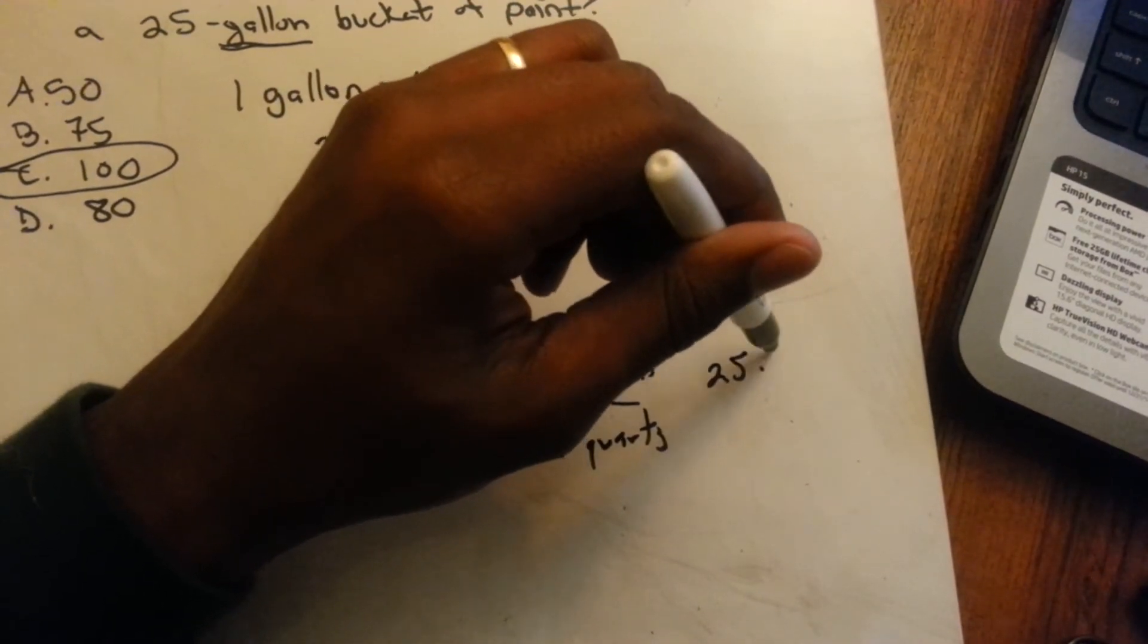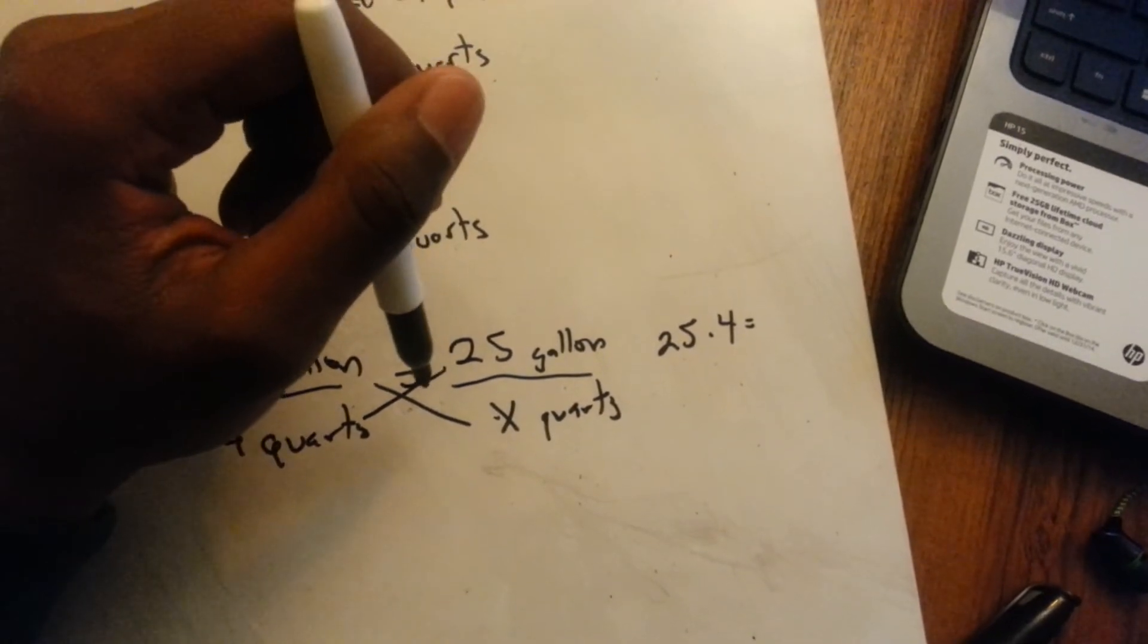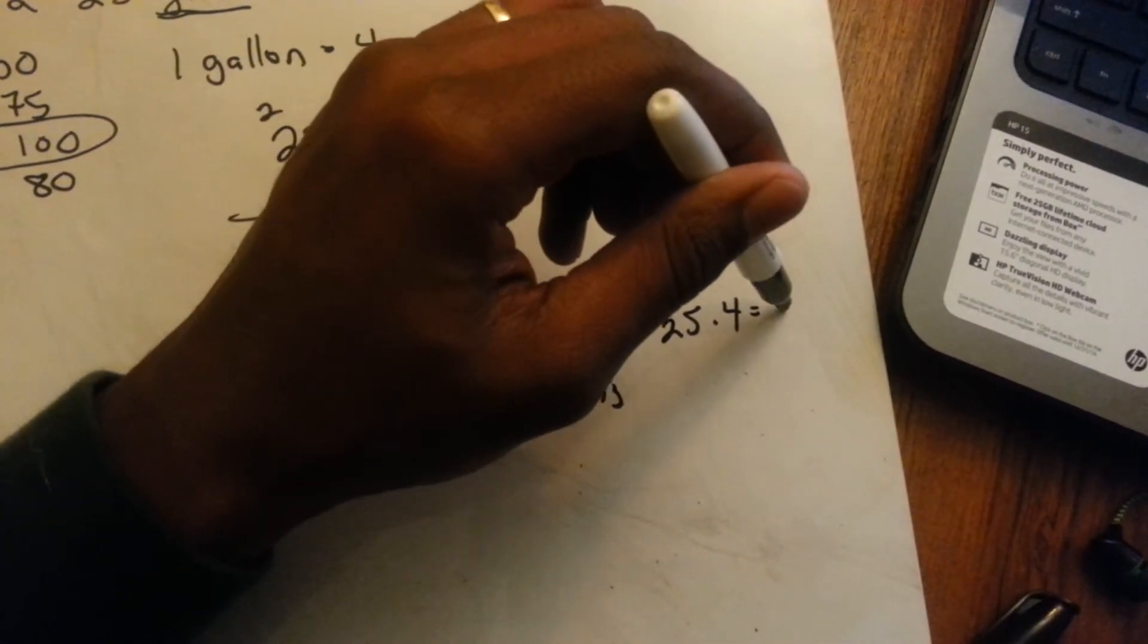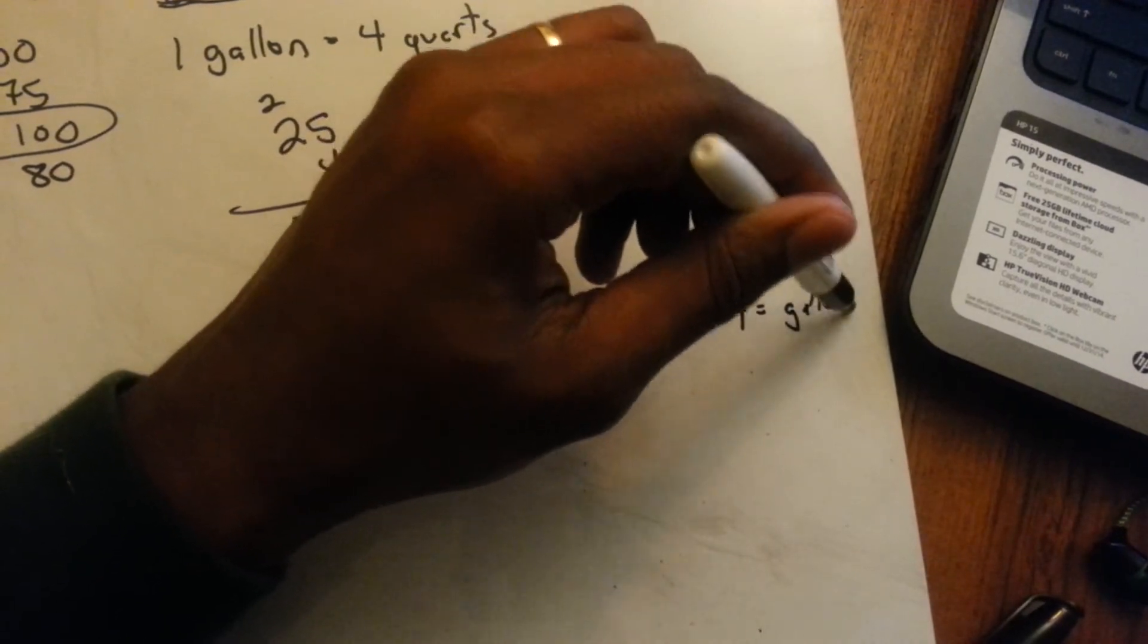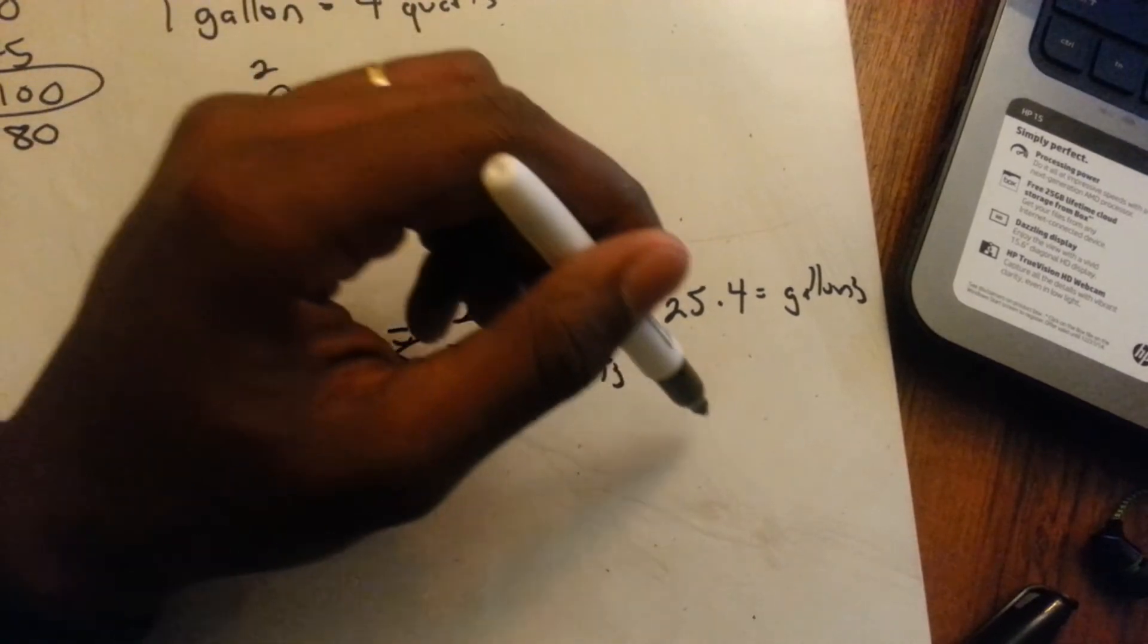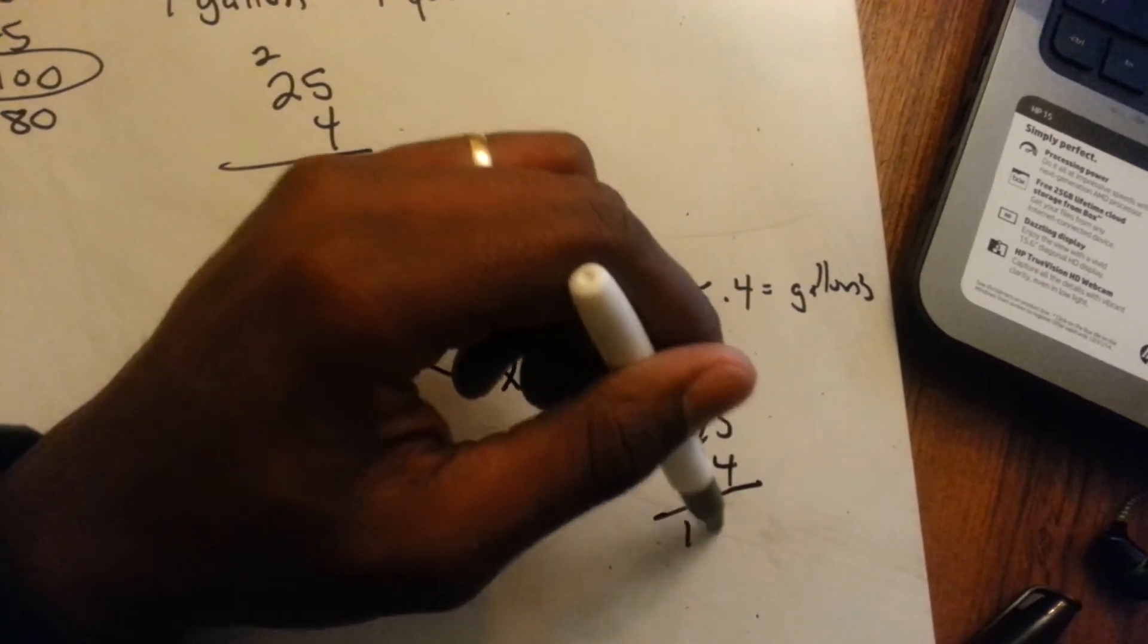25 times four equals how many gallons it would be. Equals gallons. And you just end up having to do the same thing here. So you would do the 25 times four equals 100.